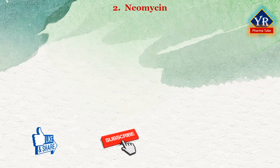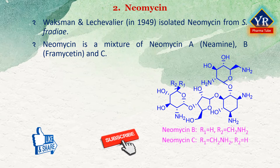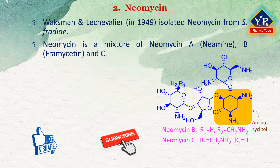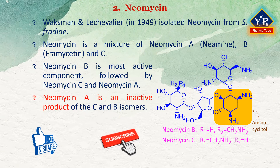The second drug is neomycin. In 1949, Waksman and Lechevalier isolated neomycin from Streptomyces fradiae. Standard grade neomycin is composed of several related compounds including neomycin A known as neamine, neomycin B which is known as framycetin, neomycin C, and a few minor compounds found in much lower quantities. They all contain the aminocyclitol 2-deoxystreptamine moiety. Neomycin B is the most active component, followed by neomycin C and neomycin A. Neomycin A is an inactive degradation product of the neomycin C and B isomers.